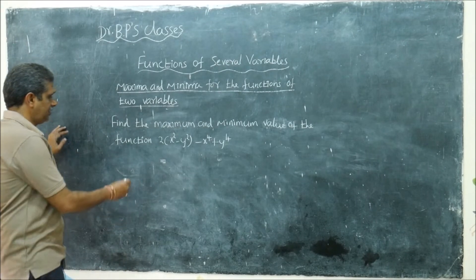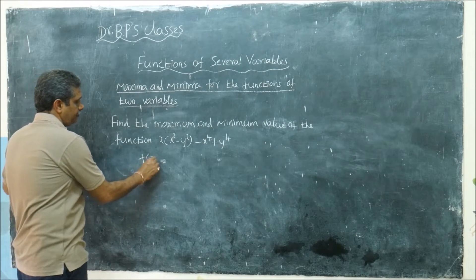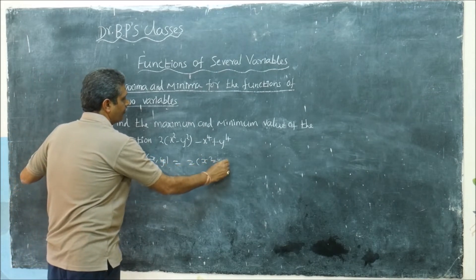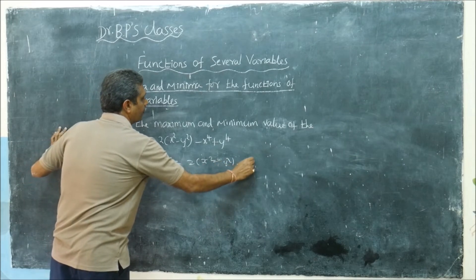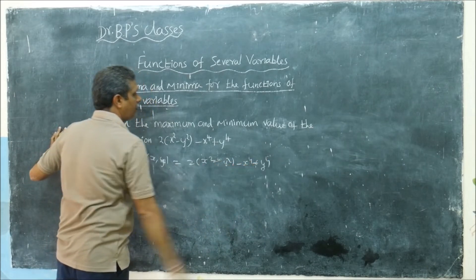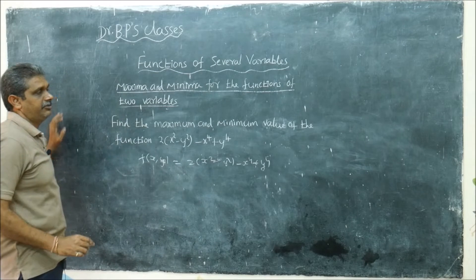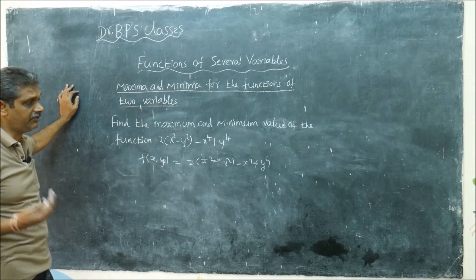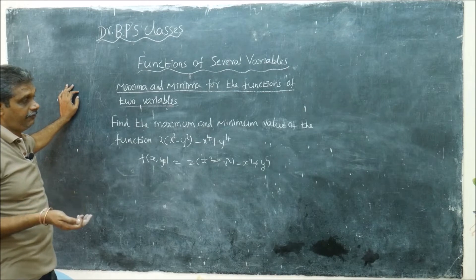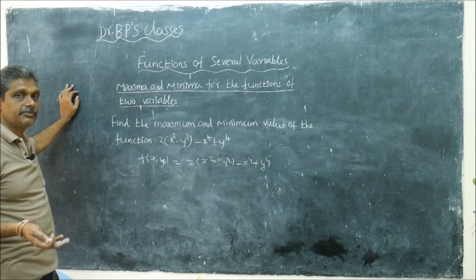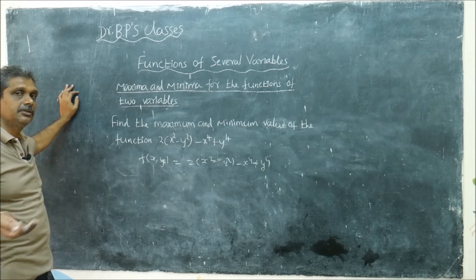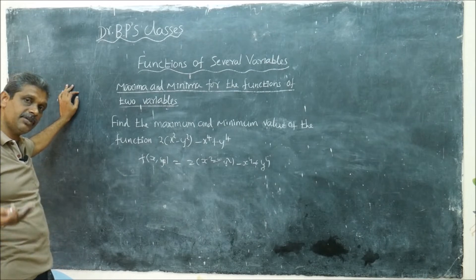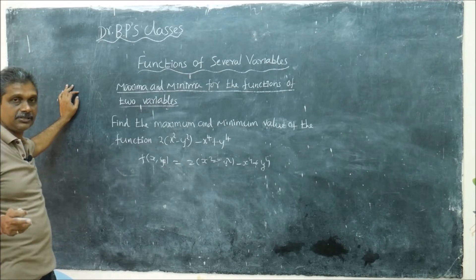So this is what f of xy — find the maximum or minimum value. You may have both. Maybe you will have a bunch of points, as I told you in the previous class. For many points you will get maximum, but the maximum value is unique. Minimum values — you may get so many points, but the value is unique.